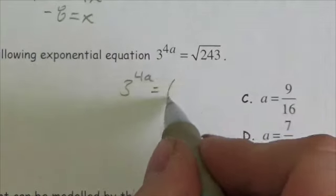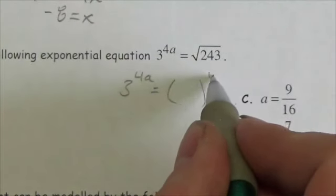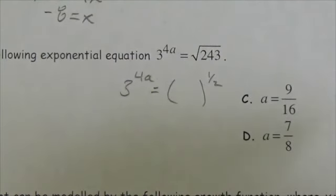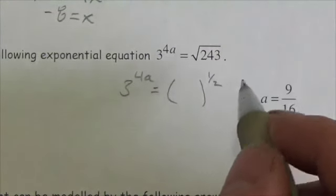Now, on the right-hand side, first of all, the square root is going to give me an exponent of 1 half. So that's the square root. I'm just going to put that off, and I'll deal with that in just a bit here.